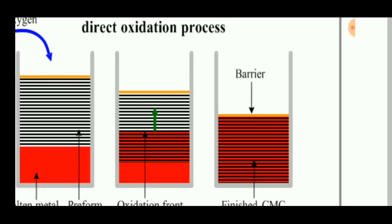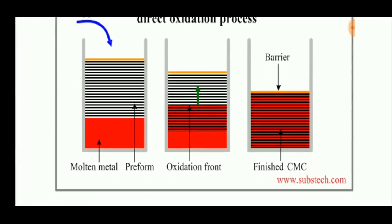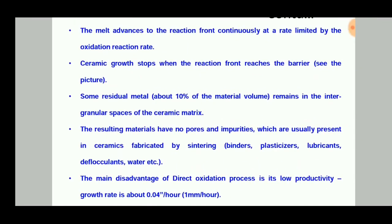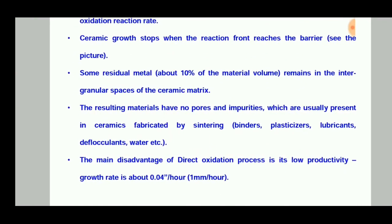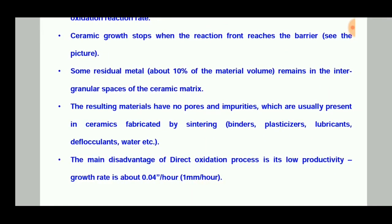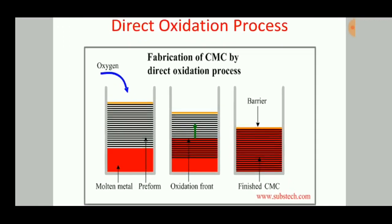A correct structure of the composite can be prepared by limiting the matrix material with the help of the barrier. Some residual metal remains in the intergranular spaces of the ceramic matrix. The resulting materials have no pores — this is a great advantage of this process. The disadvantage is that the growth rate is about 0.04 inch per hour.